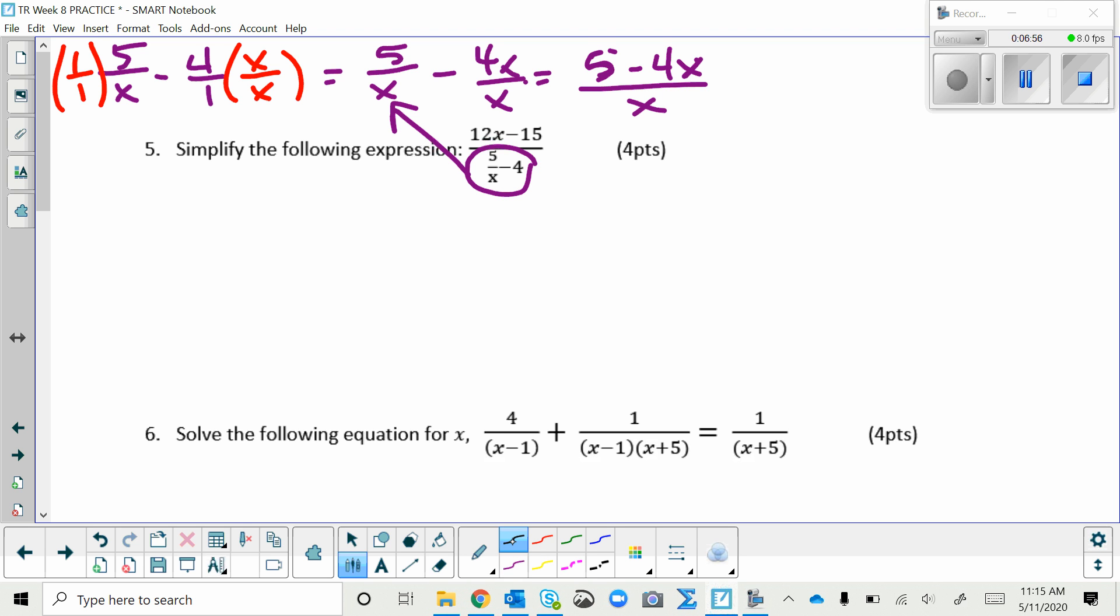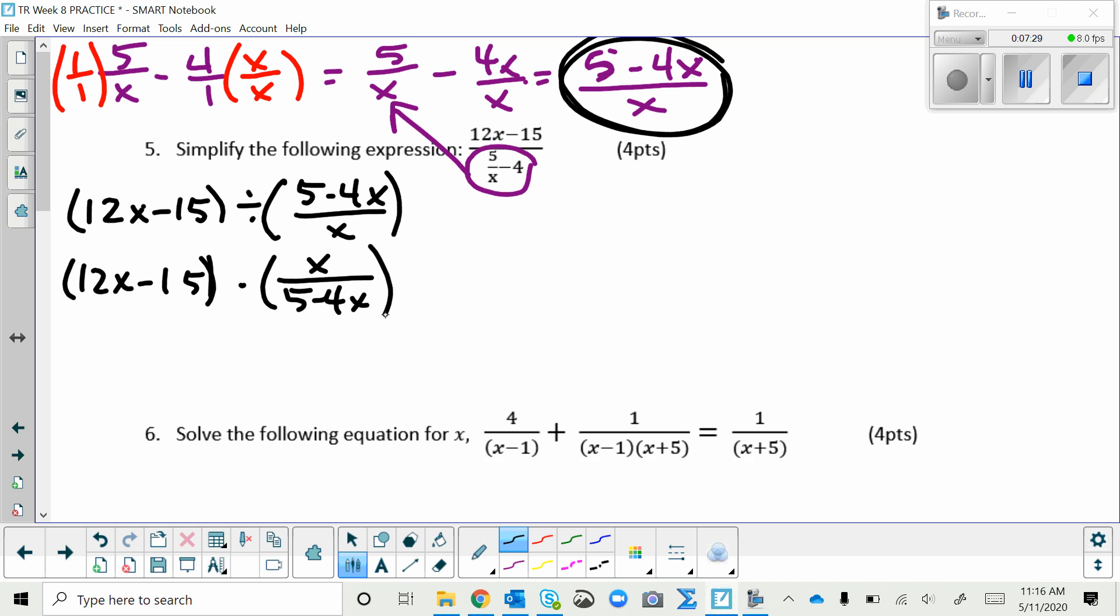So then going back to the problem, I will rewrite that from left to right instead of up and down. So 12X minus 15 divided by this new form. Now keep change flip, keep the first one the same, change to multiplication, flip the second one. And that first one, 12X minus 15, really over 1.